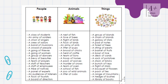For example, under the people column, we have a class of students. We can say a group of students, but 'a class of students' tells us we have a classroom filled with students. Another example is an army of soldiers — we can say a group of soldiers, but an army of soldiers sounds more correct.